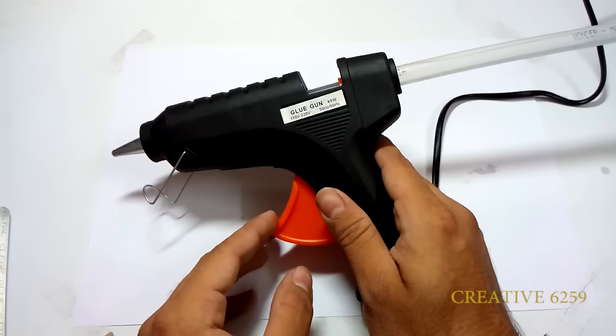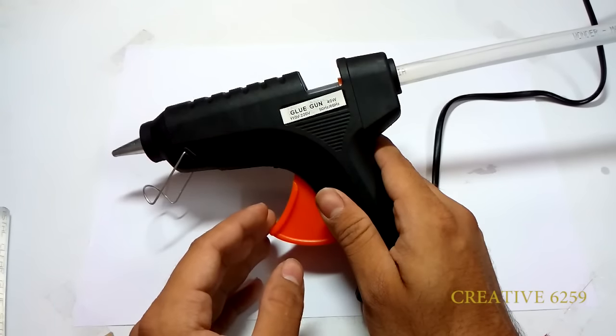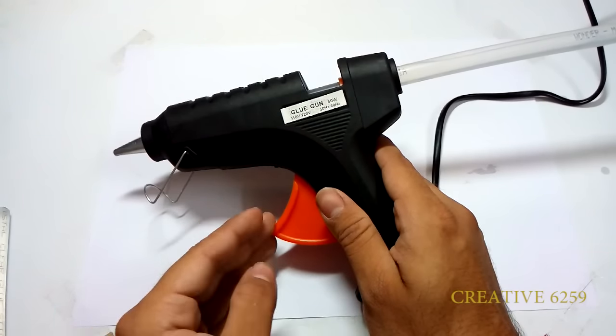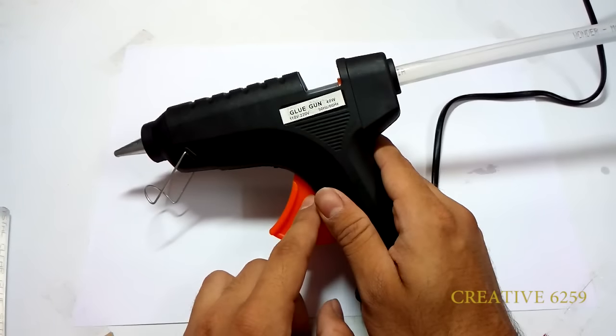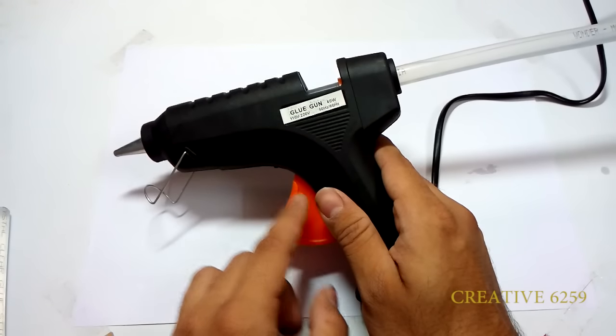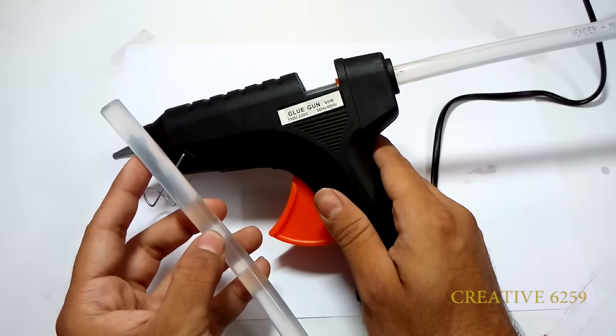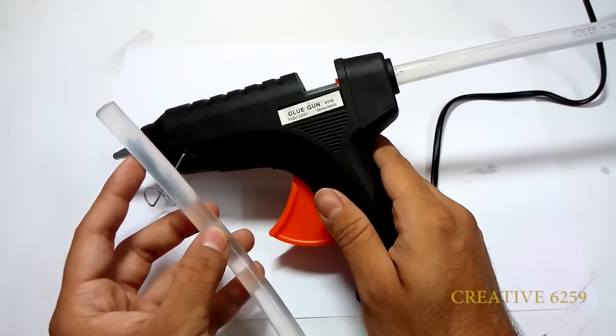You can also get this gun from your local stationery shop, but the local stationery shop can be a little bit more costly because the glue gun costs somewhere around 280 rupees with one piece of glue stick at 20 rupees each.